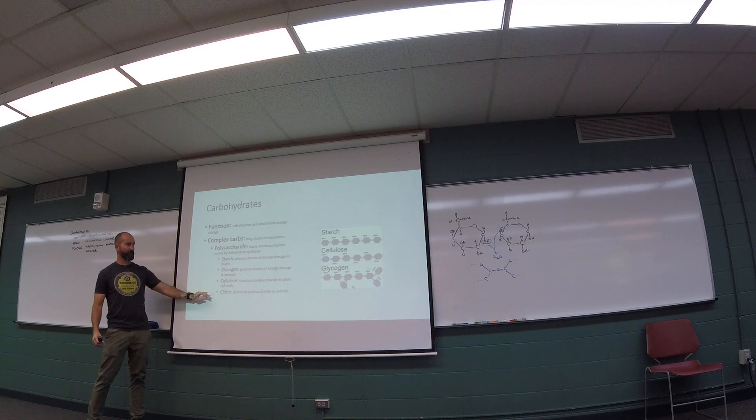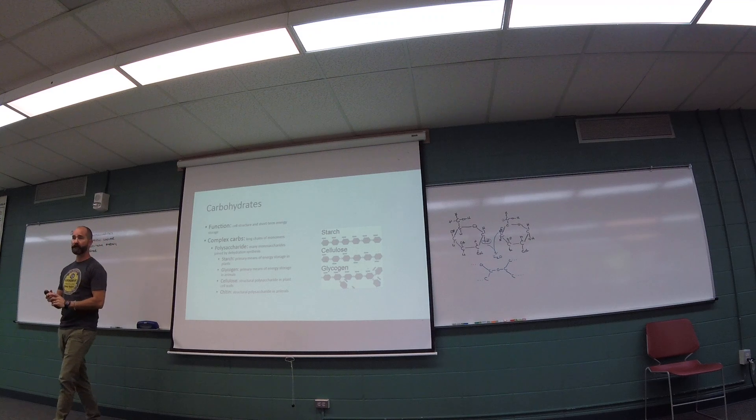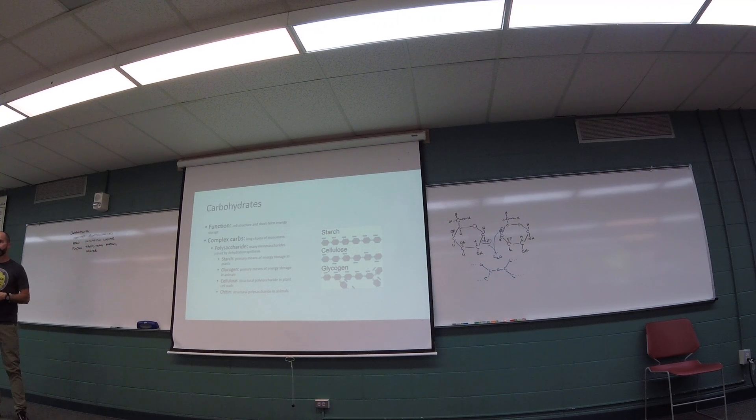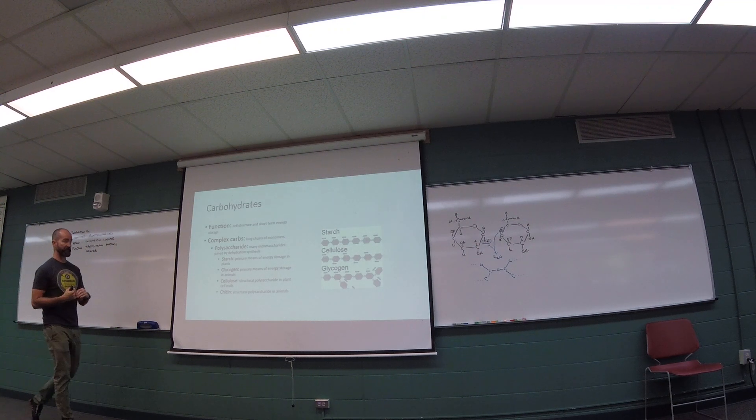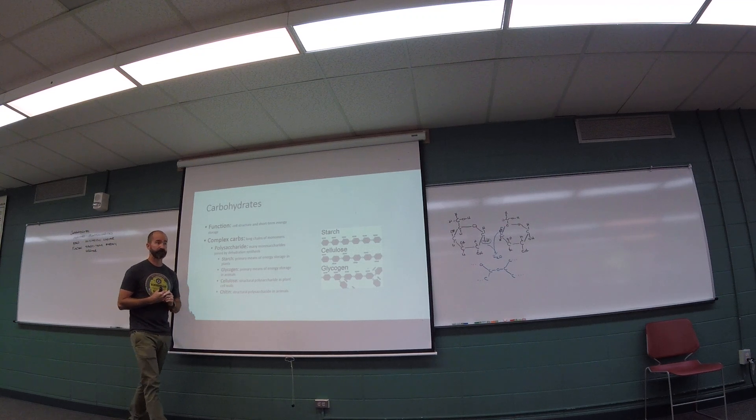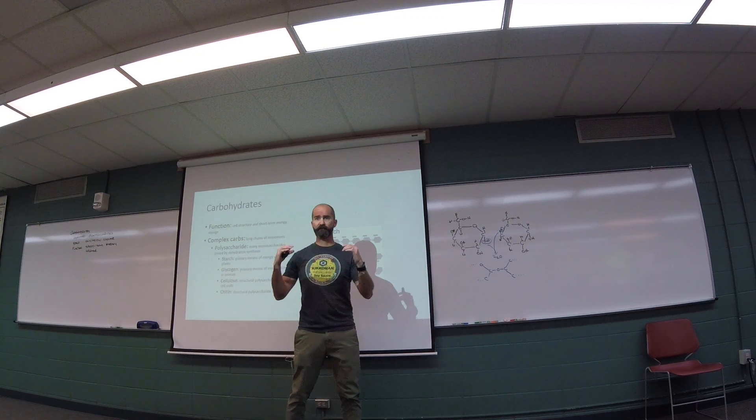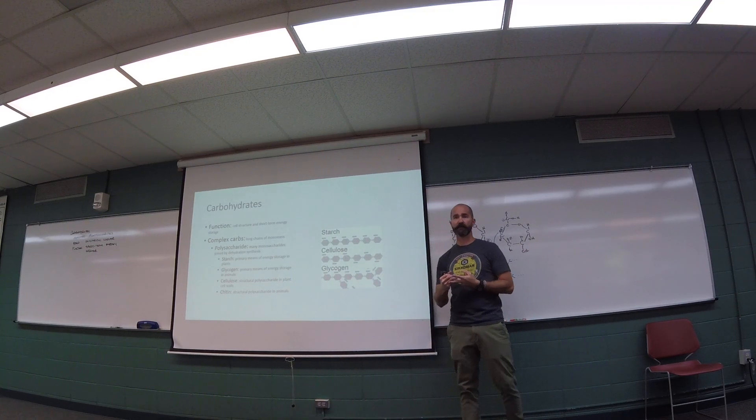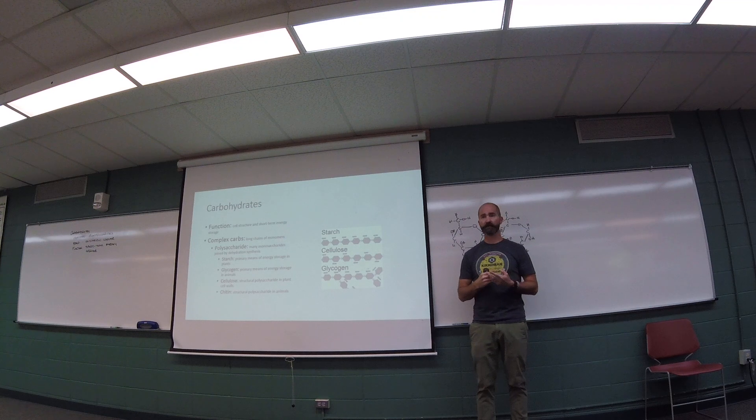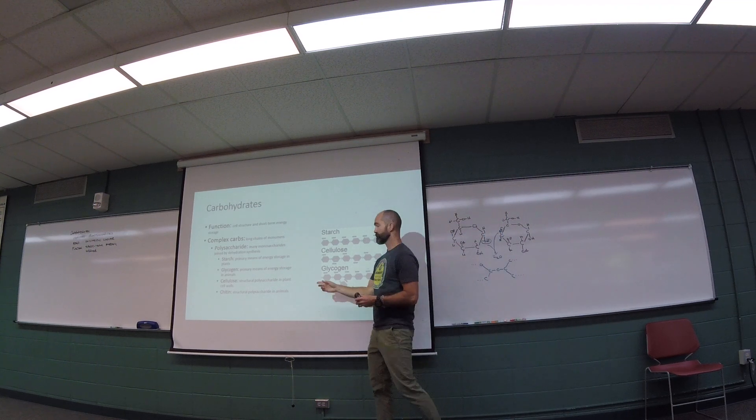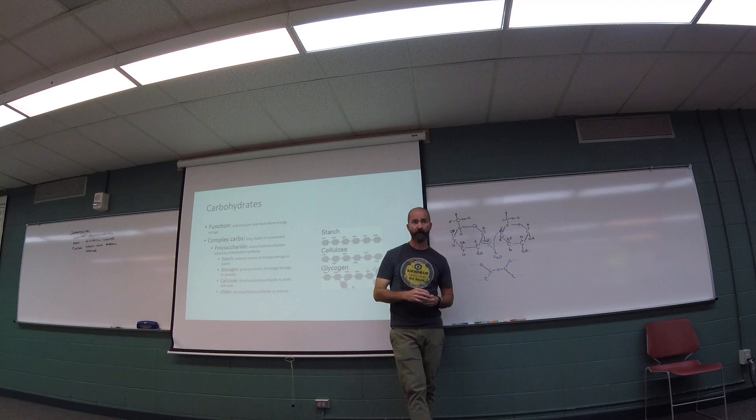There's another structural polysaccharide called chitin that's found in some animals and in fungi. Like plants, fungi have cell walls, and that cell wall consists not of cellulose but of chitin. Arthropods, things that have hard shells like insects and spiders, crabs and lobsters, those exoskeletons consist largely of chitin as well. It's a structural polysaccharide.